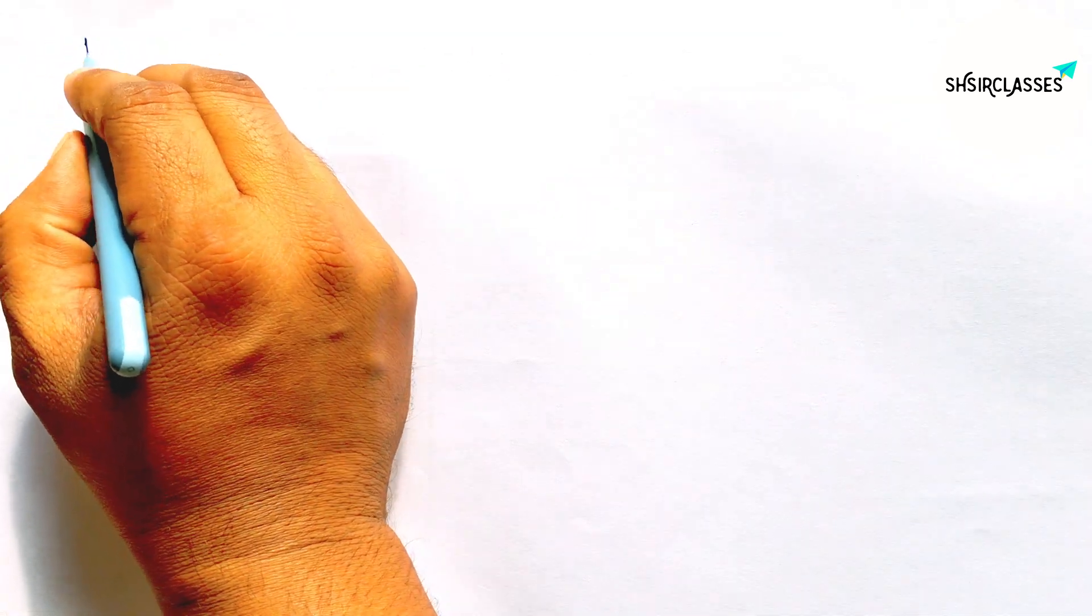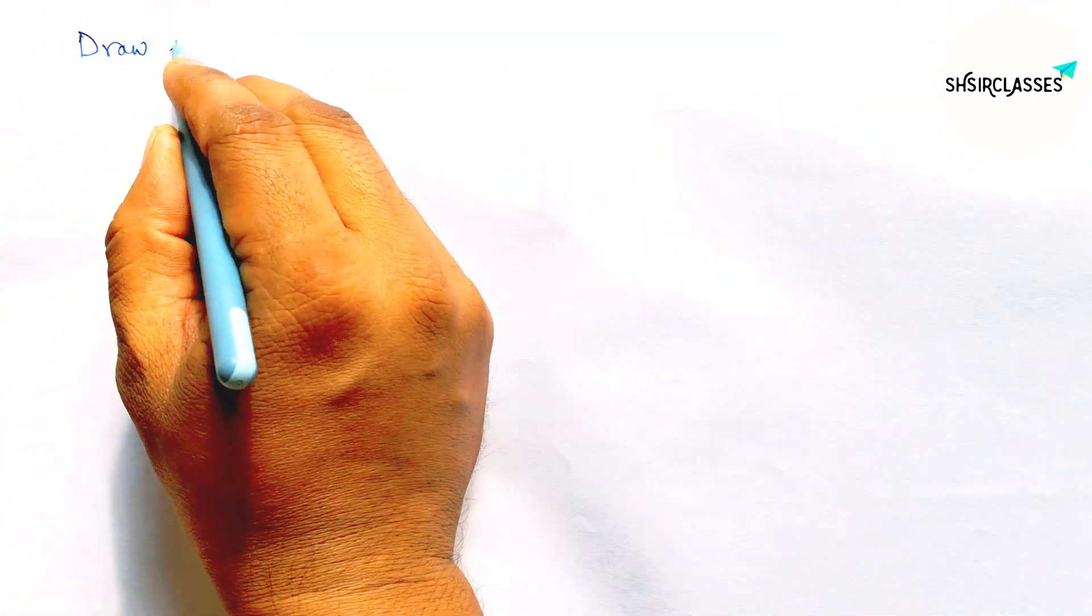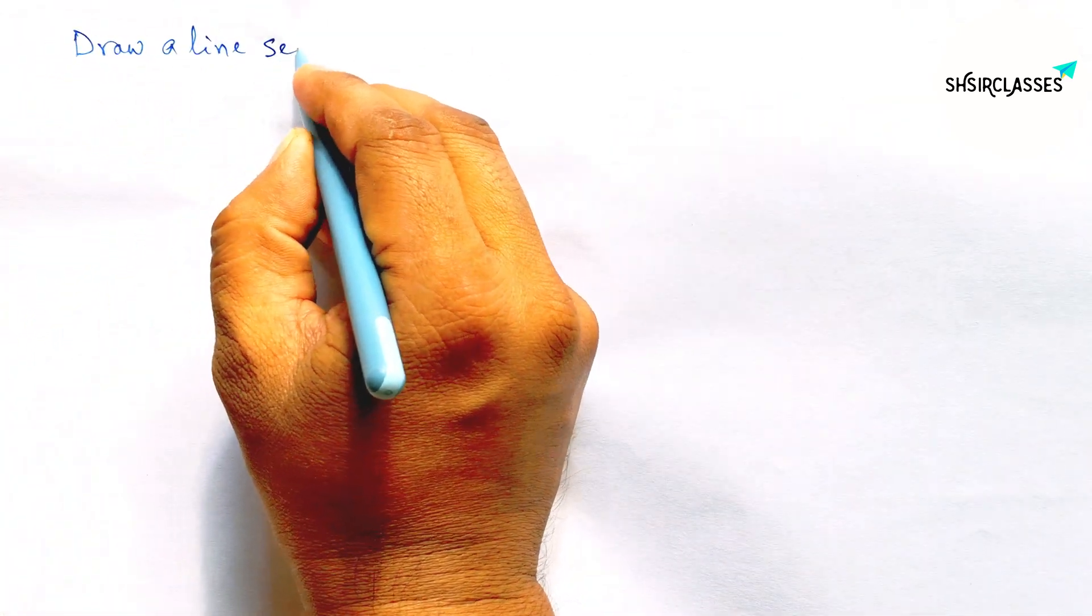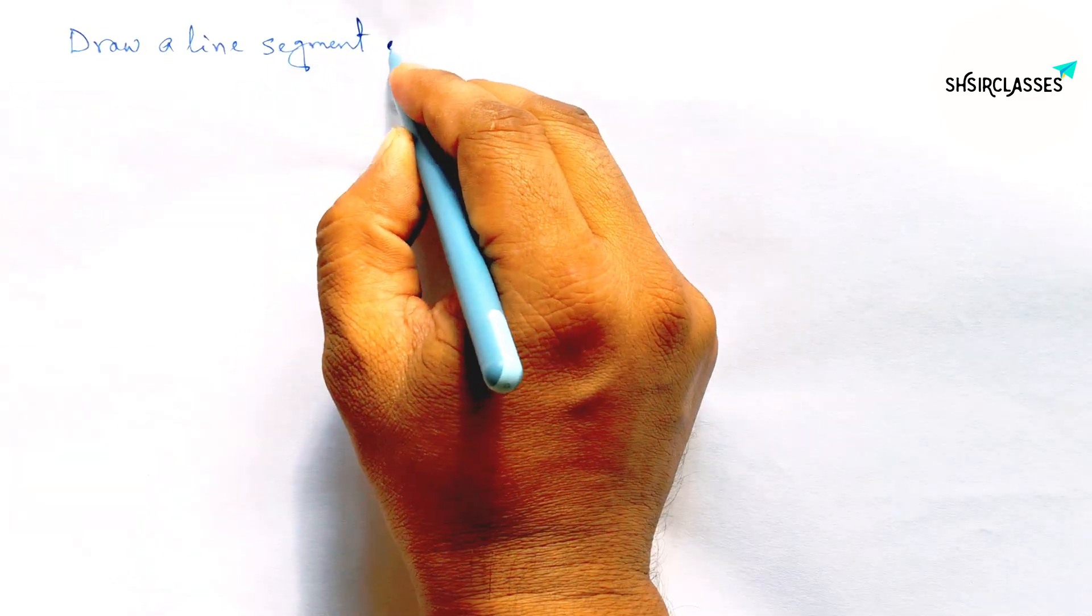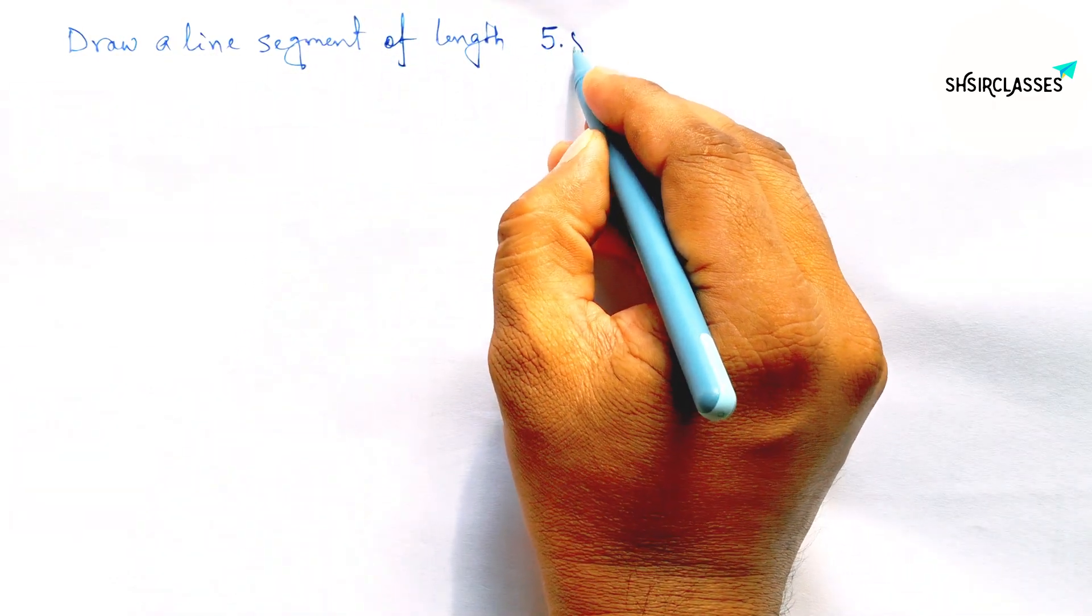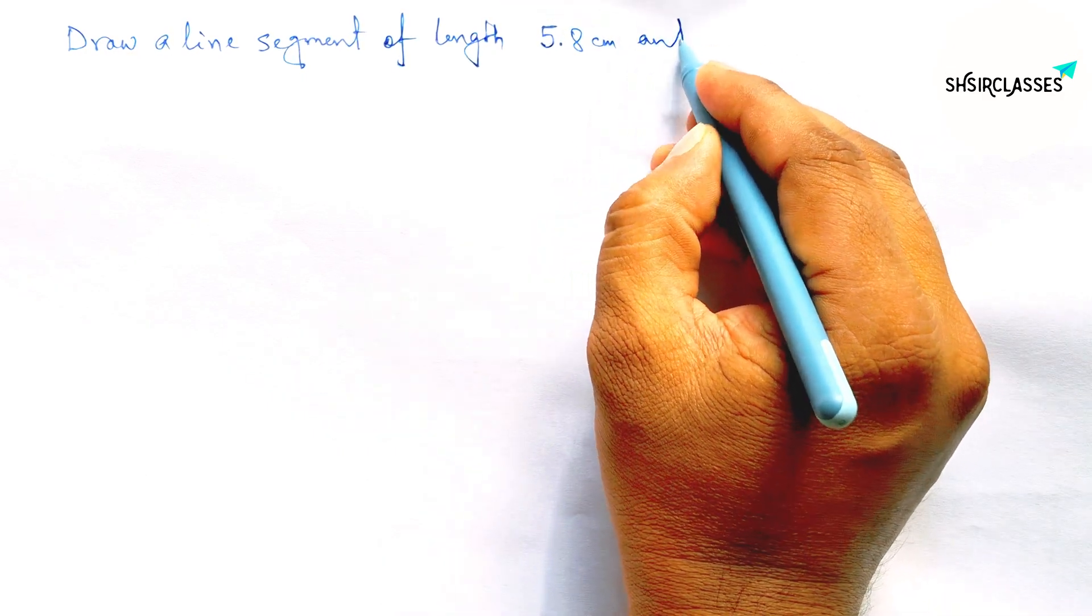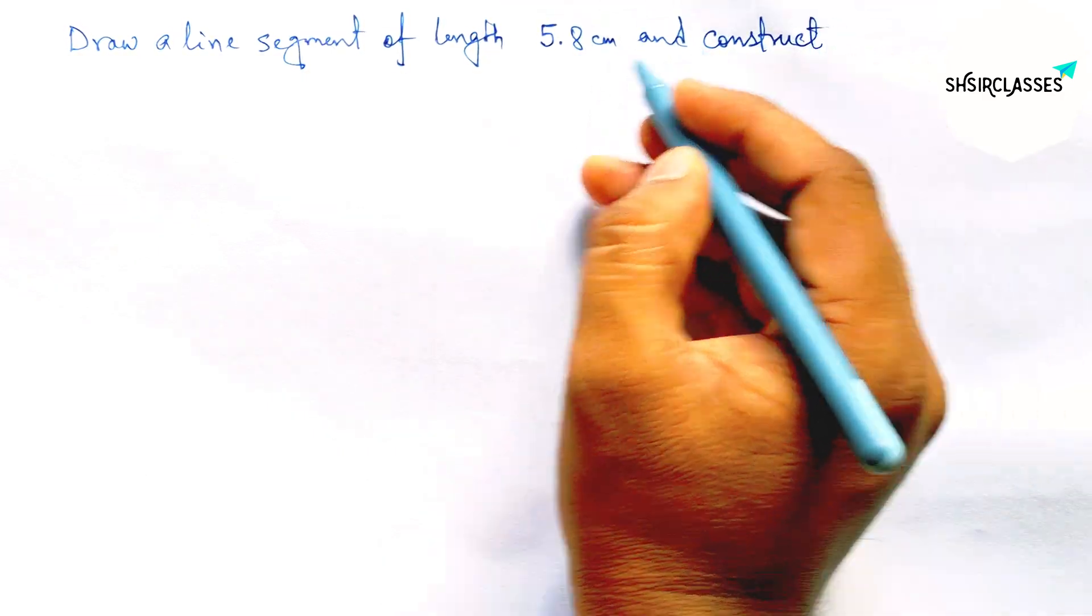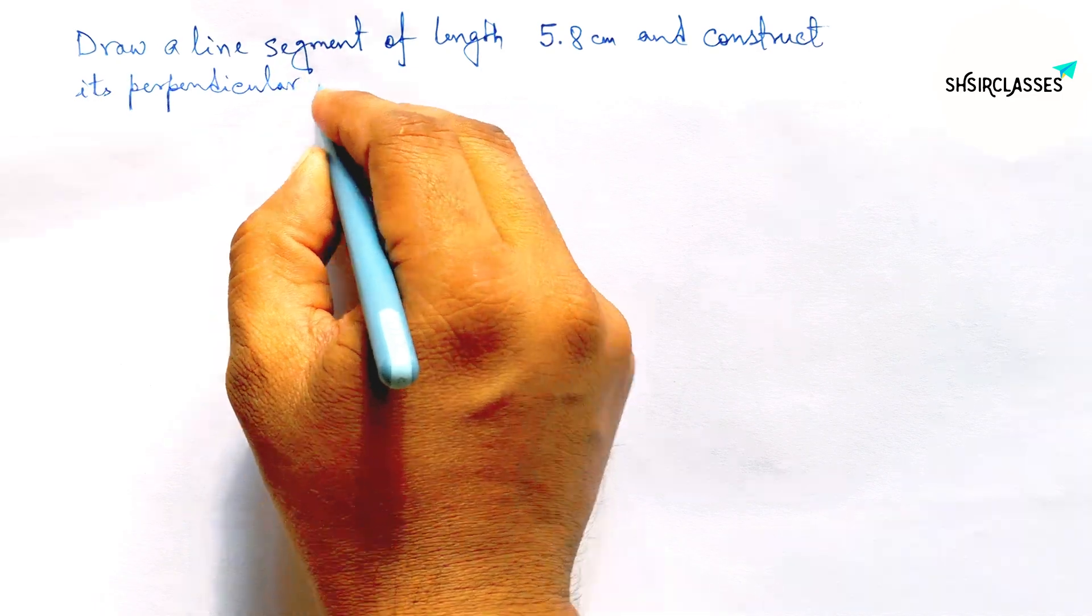Hi everyone, welcome to Cacere classes. Today in this video, draw a line segment of length 5.8 cm and construct its perpendicular bisector to the given line in easy way.